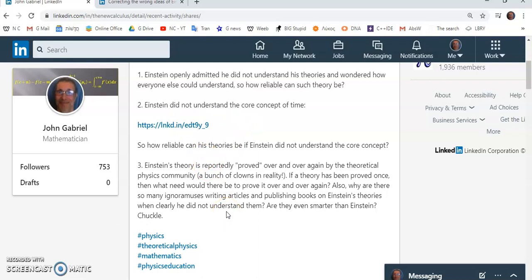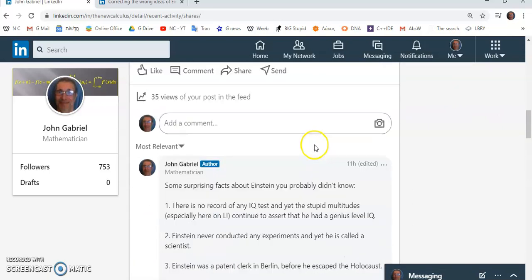Number three, Einstein's theories reportedly proved over and over again by the theoretical physics community, who I call theatrical physicists. They're really a bunch of clowns in reality. All those people who are constantly coming up with Einsteinian terminology for events that really have nothing to do with Einstein's theories. They'll talk about gravitational waves, but that's not equivalent to what Einstein thought about when he thought about these things. If a theory has been proved once, then what need would there be to prove it over and over again? And also, why are there so many writing articles and publishing books on Einstein's theories when clearly he did not understand them? Are they smarter than Einstein? That I could never somehow figure out.